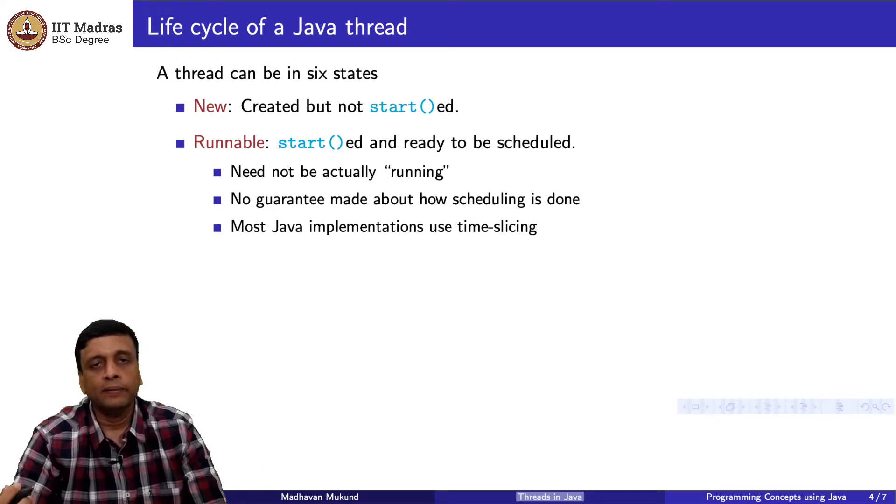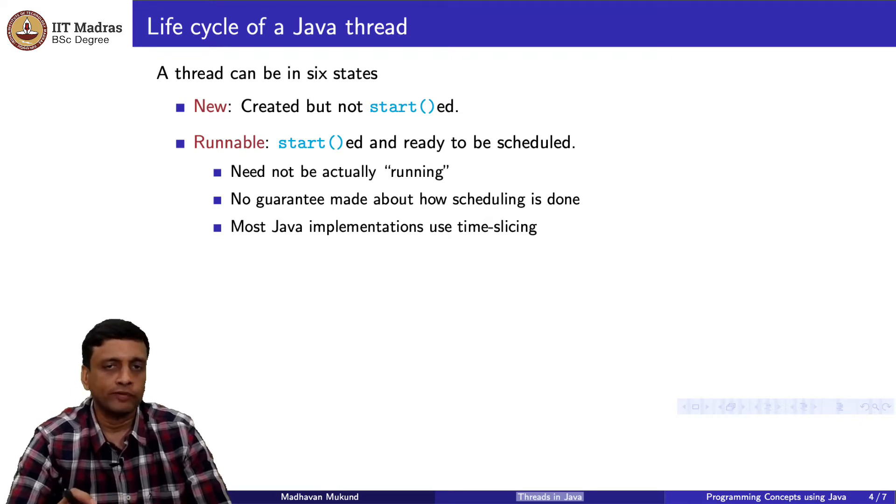Runnable does not mean running. Running means it is currently executing. But remember that if you have say for example only a single CPU, you could have many things potentially which are active and therefore they are runnable, but only one of them can be running at a time. Moreover, Java does not promise you also in what order these things will be scheduled. In general, you will be doing it by allotting a certain amount of time per thread, then swapping it out, putting another one. If you have even one resource only to compute on, you can have many threads running by each one executing for a small amount of time.